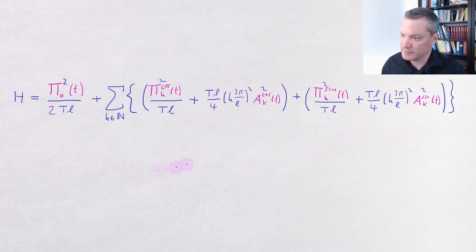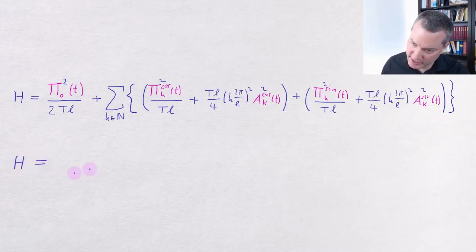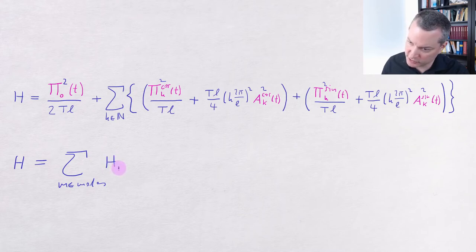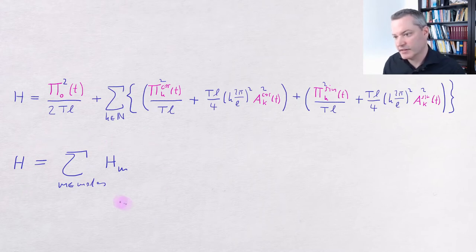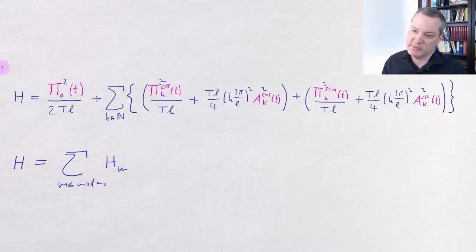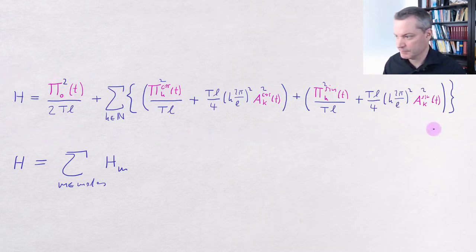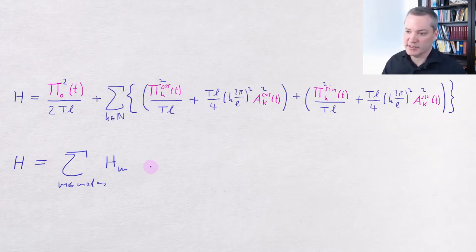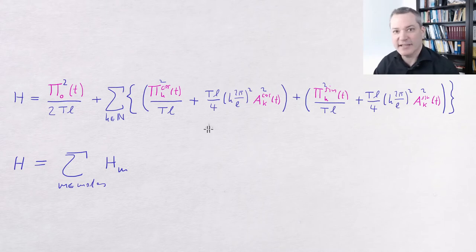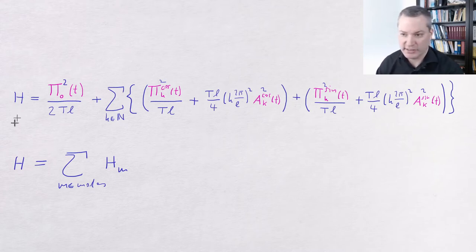We see that our Hamiltonian is a sum over individual terms, one for each of the modes, so H is a sum running over all the modes m with one Hamiltonian term for each mode. This again reflects the fact that our modes do not interact at all — there are no interaction terms in the Hamiltonian. The value of the Hamiltonian function is the total energy of the system, so the total energy is simply the sum of the energies stored in each mode with no interaction energies mixing the modes. Since the action of our field does not depend explicitly on time, one can show using Noether's theorem that the total energy H is conserved, that is, H is a constant of motion.